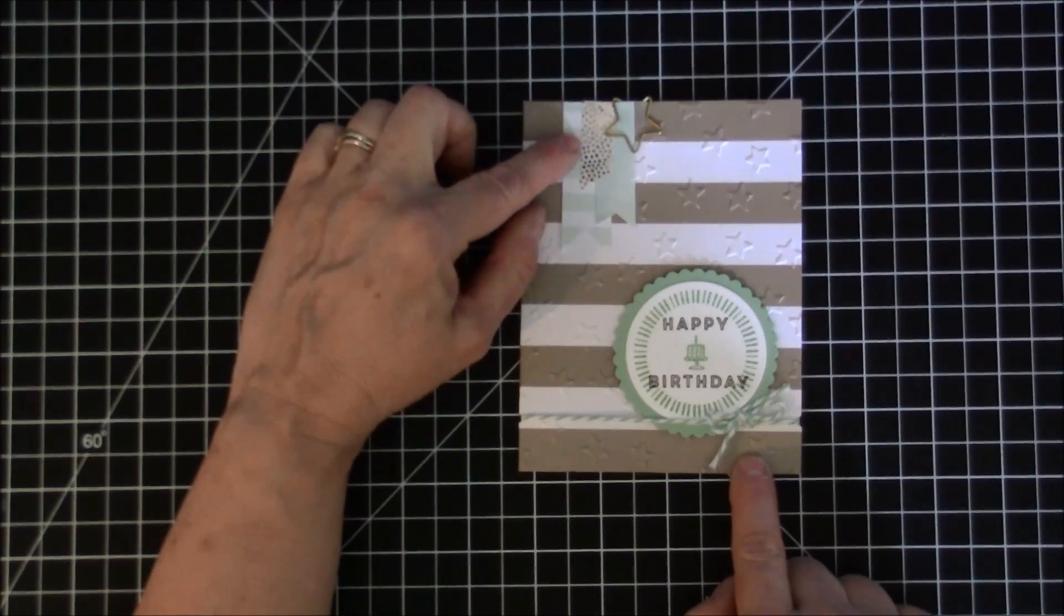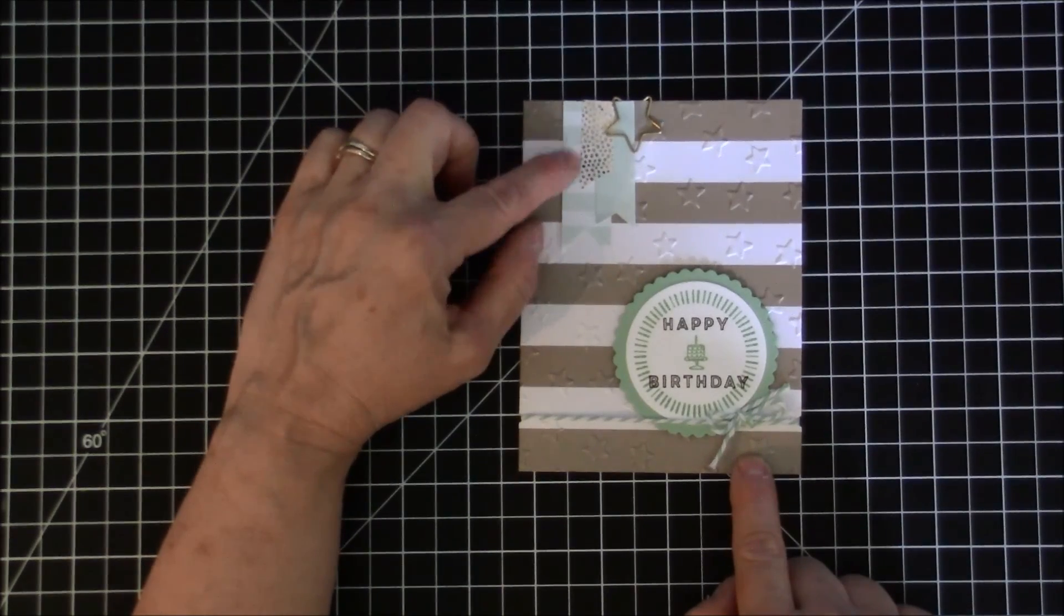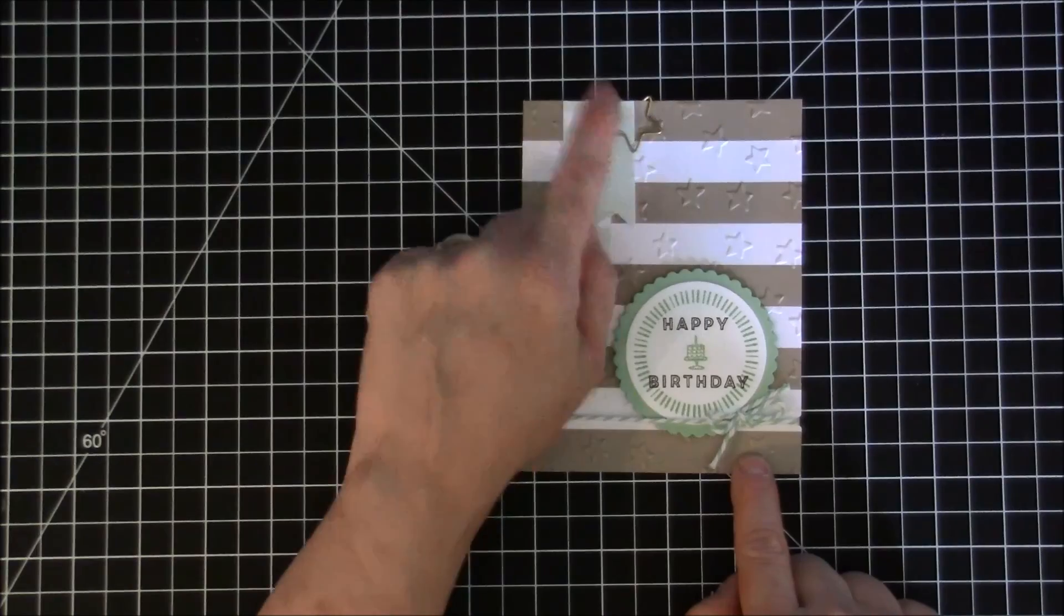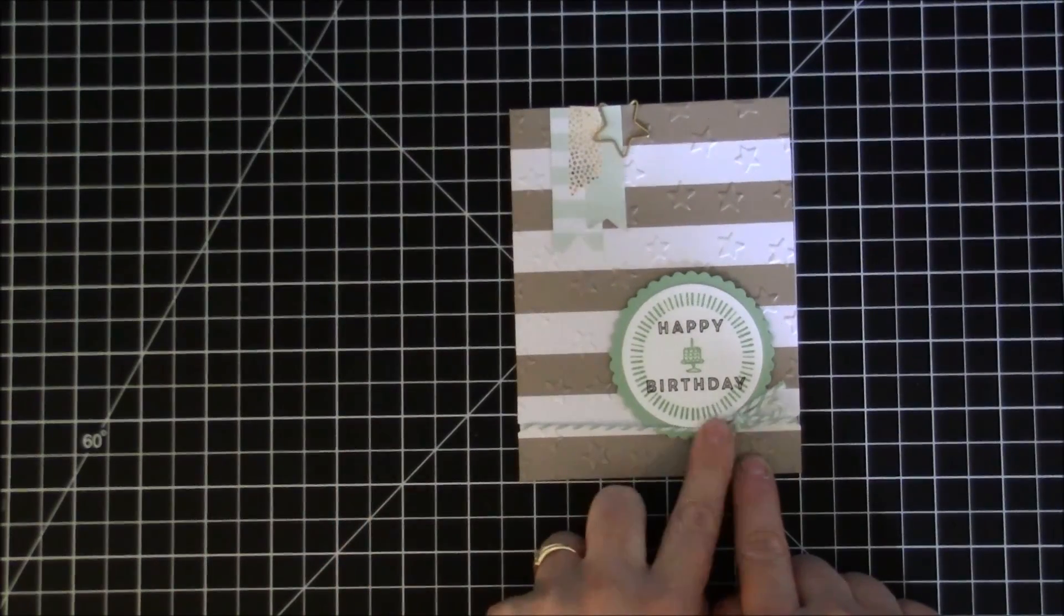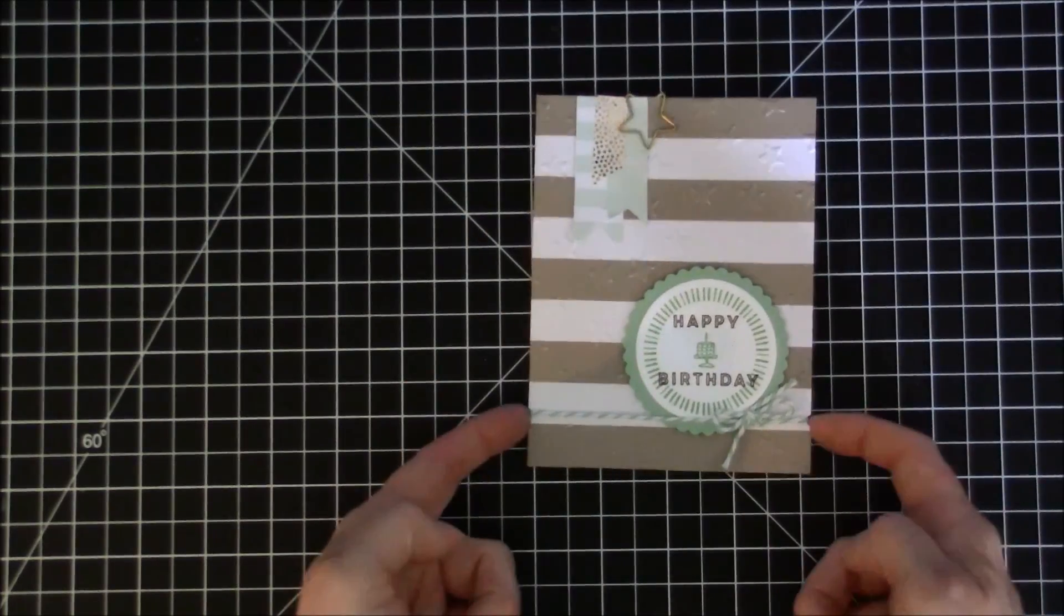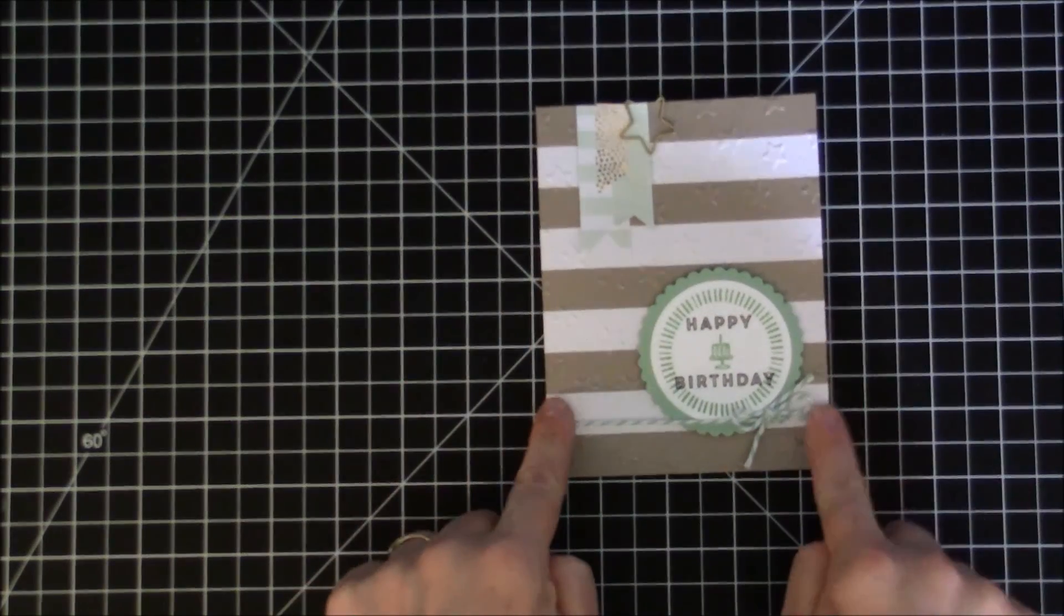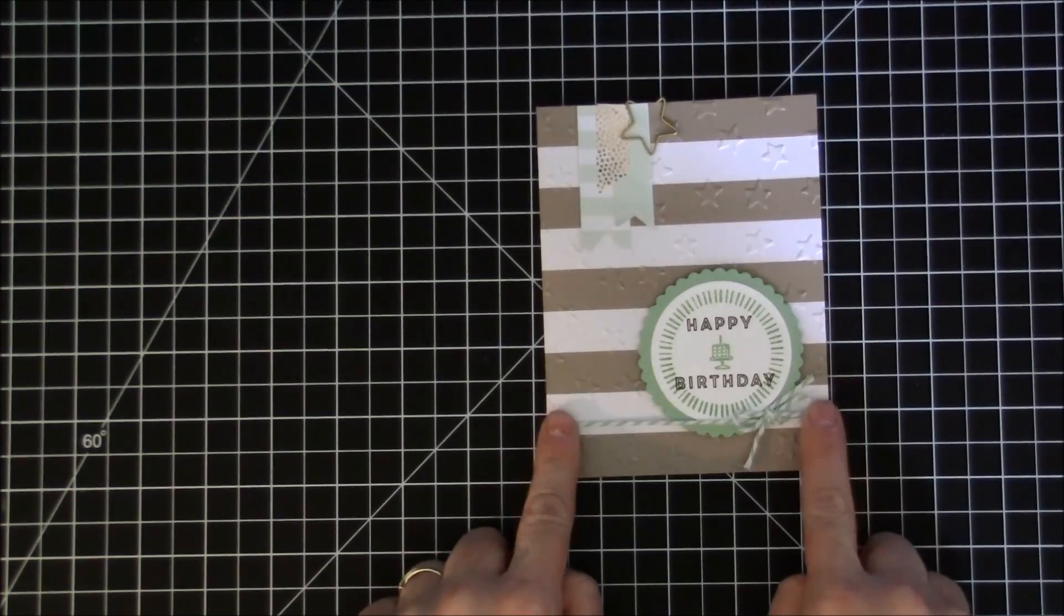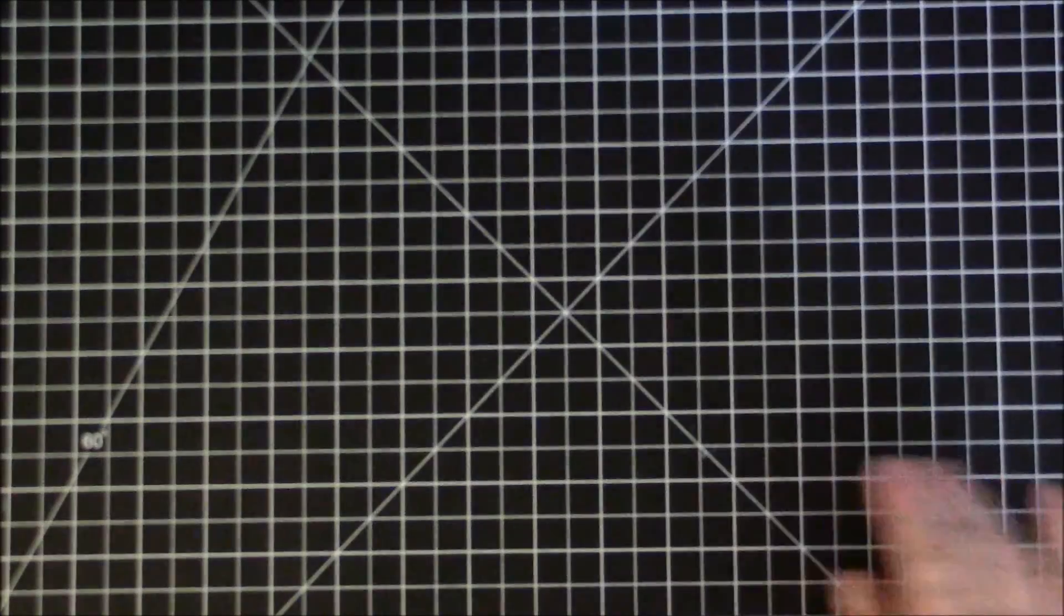I used some of the washi tape that's new to the catalog from the Affectionately Yours designer series paper line and then I just added a little star paper clip here that I had in my stash along with mint macaron baker's twine. This card I flipped so that the notches are on the bottom so I could put the baker's twine on the bottom of the card.